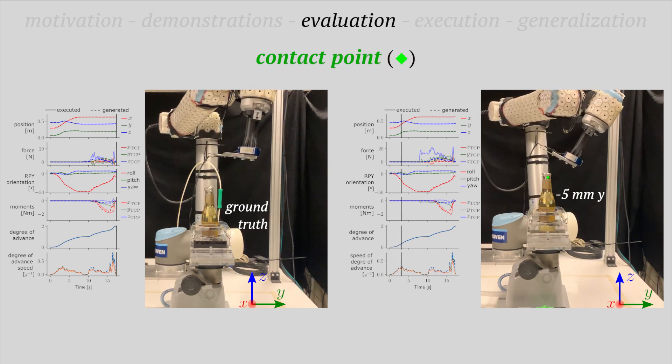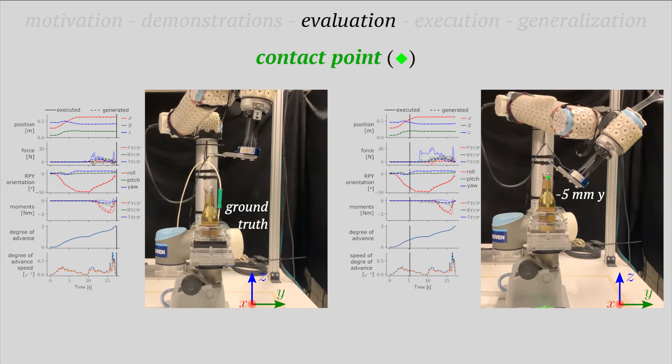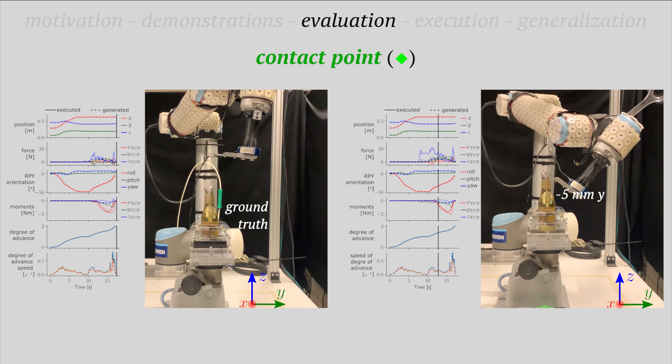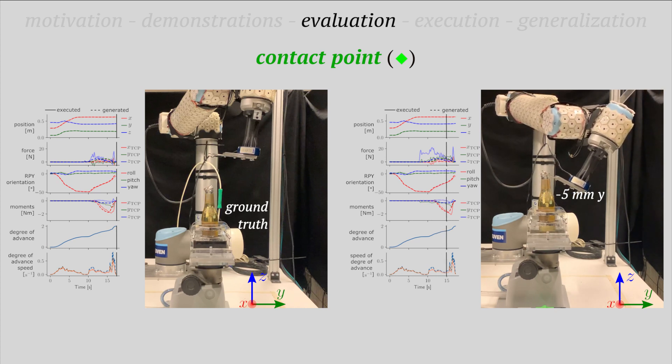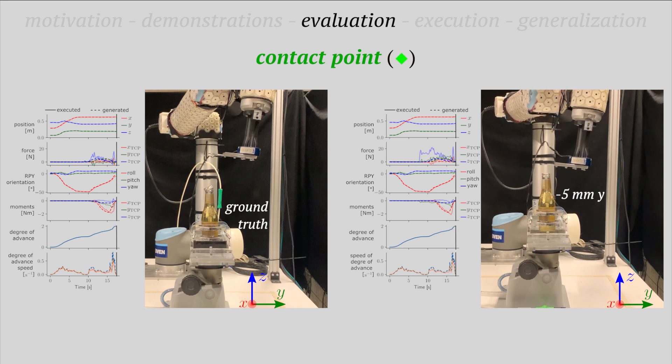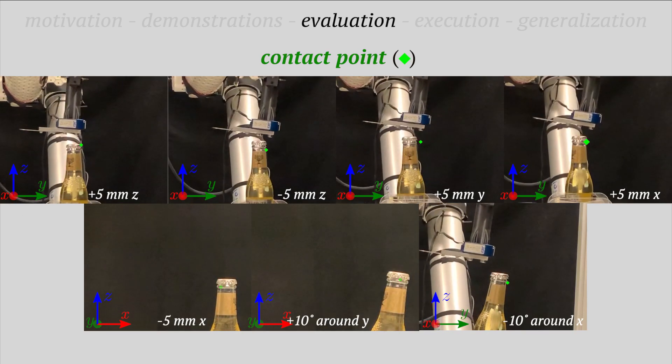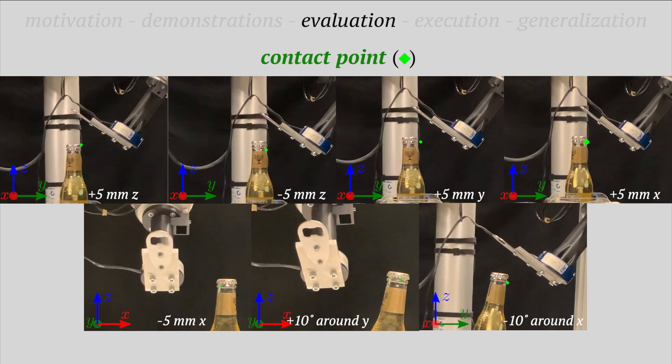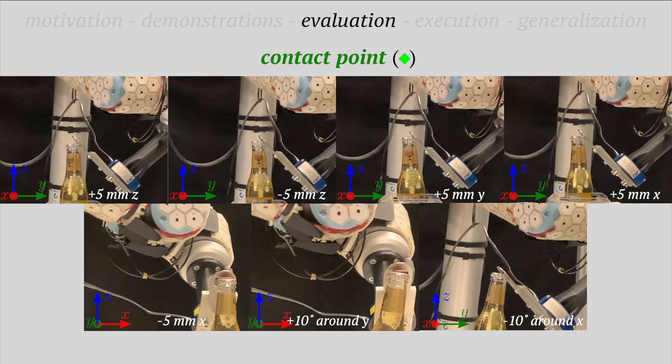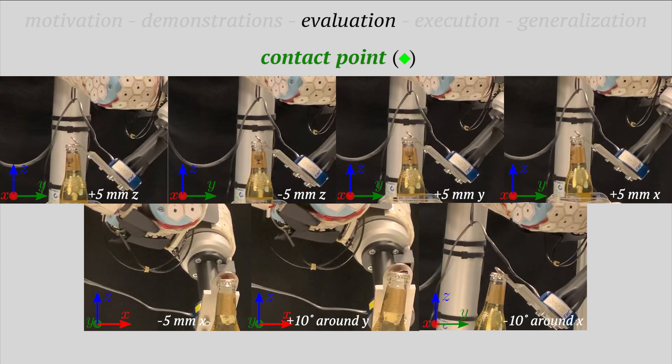We tested robustness against vision system uncertainties by shifting the contact point five millimeters in the y-axis. The robot approaches and gets stuck at one side of the cap. Range feedback enabled the system to recover and successfully complete the task. Additional robustness tests were performed by shifting the contact point in different directions and by tilting the bottle. In each of these cases the robot succeeded in the task.